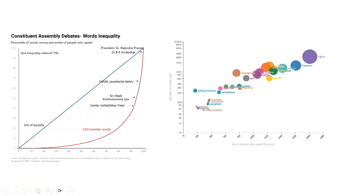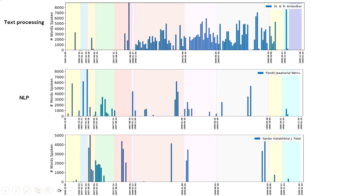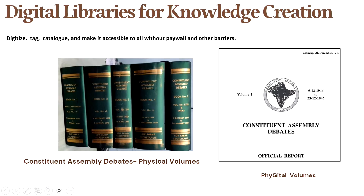Other things we could figure out include who spoke on what topic — frequency of words. For example, Gandhi was spoken more than equality, and prohibition was spoken more than socialism. We discovered that Ambedkar — given the feud between Ambedkar and Gandhi that lasted for several decades — did not speak a single word about Gandhi in the entire Constituent Assembly. And prohibition was mainly discussed by Adivasi leaders, because for them liquor consumption is important as part of their culture. This is what you can get if you go from physical to first-level digitization, optical character recognition, and then making it readable.